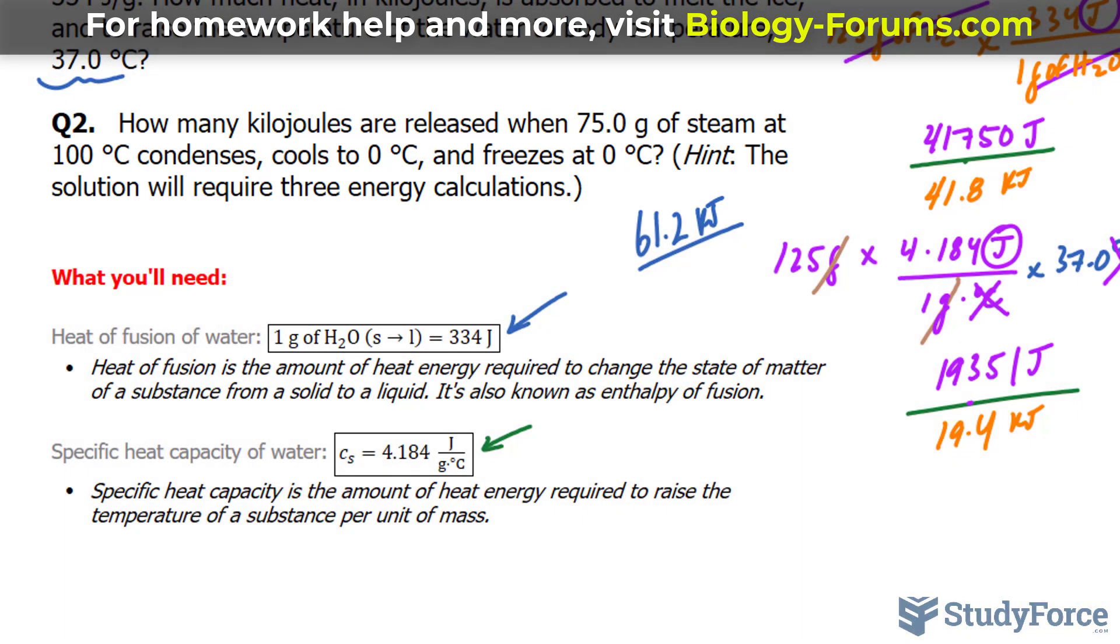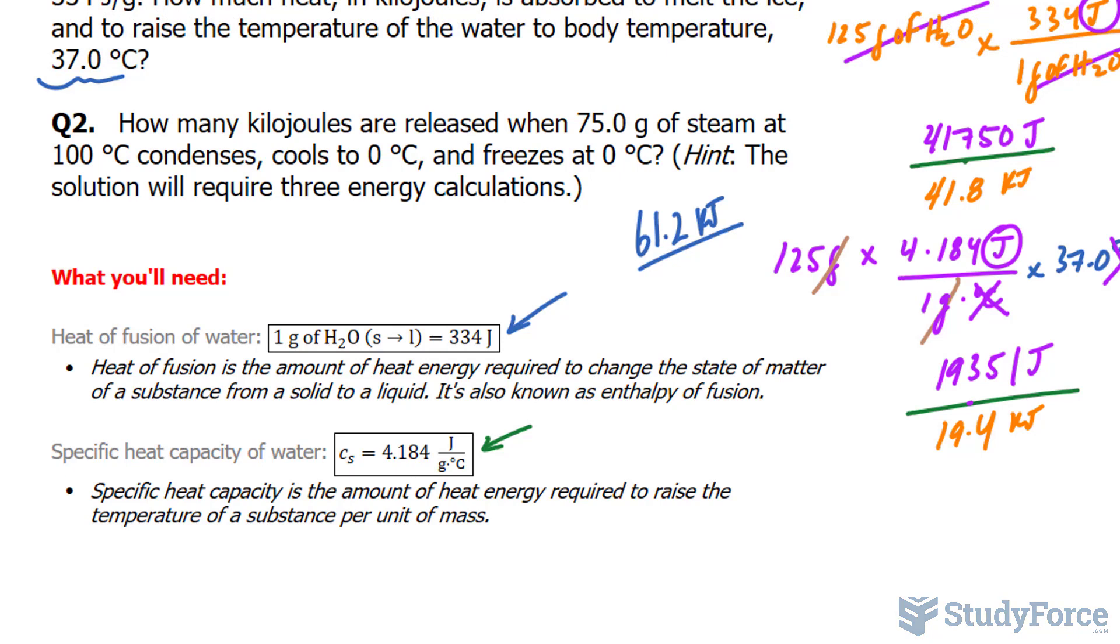To do this problem effectively, we'll need a constant which is actually not shown here. The constant is the heat of vaporization constant, where one gram of H2O from gas to liquid is equal to 2,260 joules.